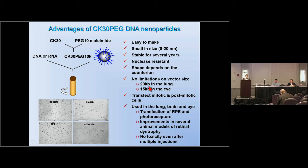We found there are no limitations on the size of the vector. In airway epithelial cells it was used up to 20 kb; in the eye we used it up to 15 kb, and we are testing approximately 22 kb for an Usher type 2A model. It can transfect mitotic and post-mitotic cells well, and has been used for cystic fibrosis in the lung and in the brain and eye. We have shown it can transfect RPE and photoreceptor cells, with appreciable improvement in rescuing several animal models of retinal degeneration.